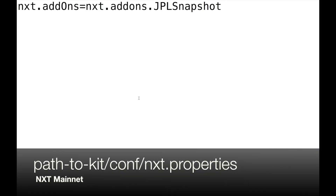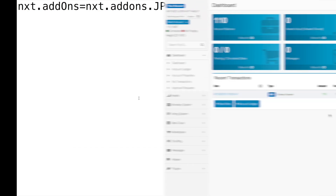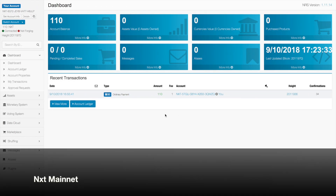It's really important to know that we are working on the main net of the client wallet right now. You're going to want to navigate on your computer to the directory where that program is stored, and you're going to find or create the NXT dot properties file. We're going to add this line right here. Inside the Conf directory of the application files for the NXT client I'm running, I created the NXT properties file, added this line, and saved it.